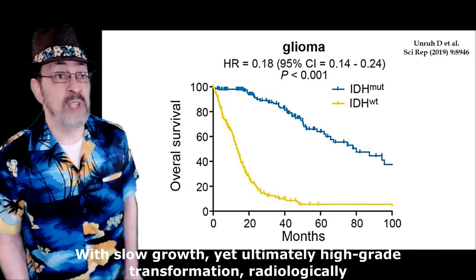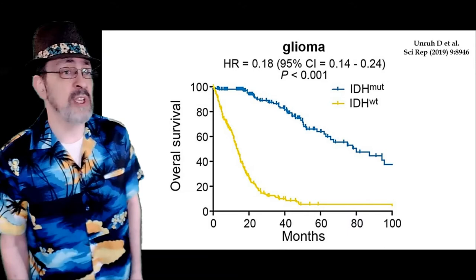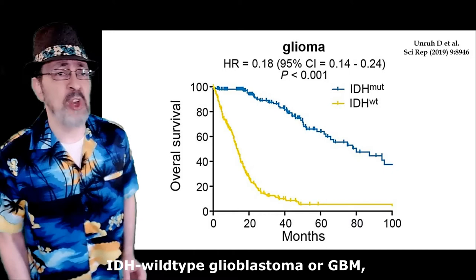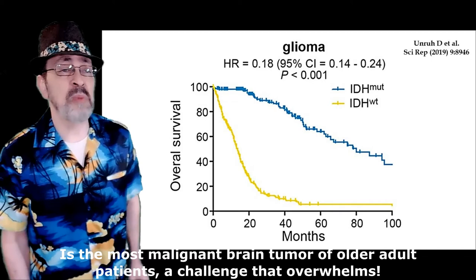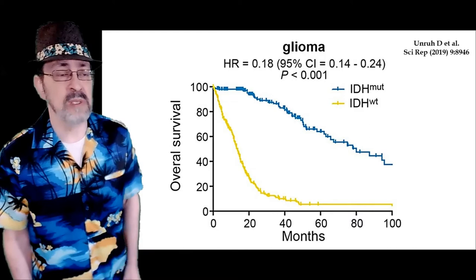With slow growth yet ultimately high-grade transformation radiologically. IDH wild-type glioblastoma, or GBM, is the most malignant brain tumor of older adult patients — a challenge that overwhelms.